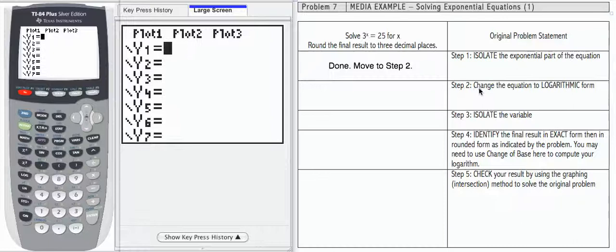Step 2 is to change the equation to logarithmic form. If I'm going to do that, I'm going to reverse the exponential form that I have, and I'm going to write the equation as log base 3 of 25 equals x. The exponential form here is 3 to the x equals 25, which is what we started with.